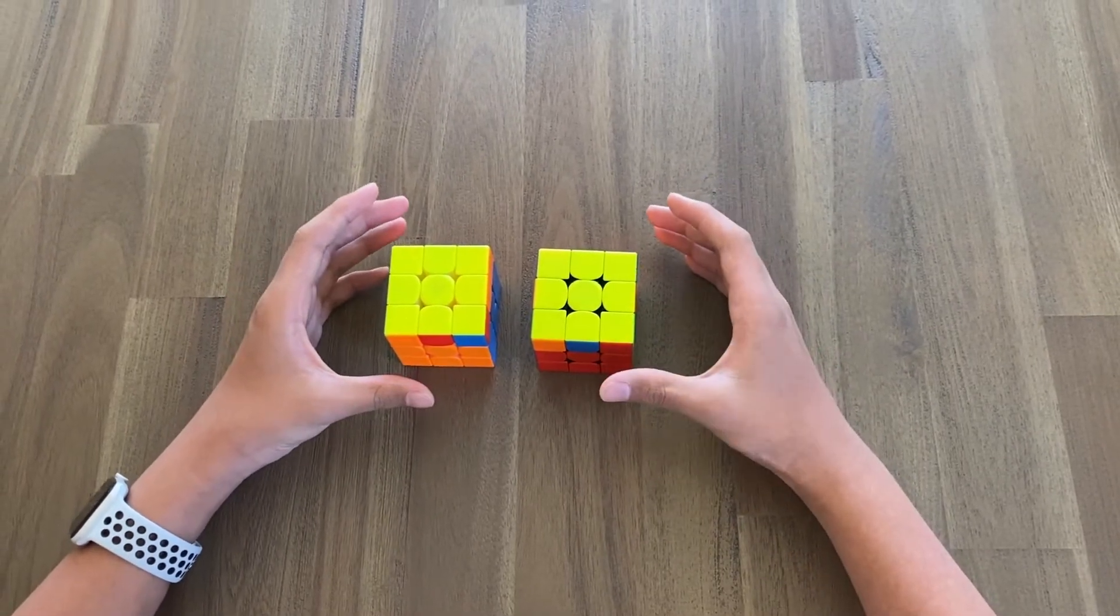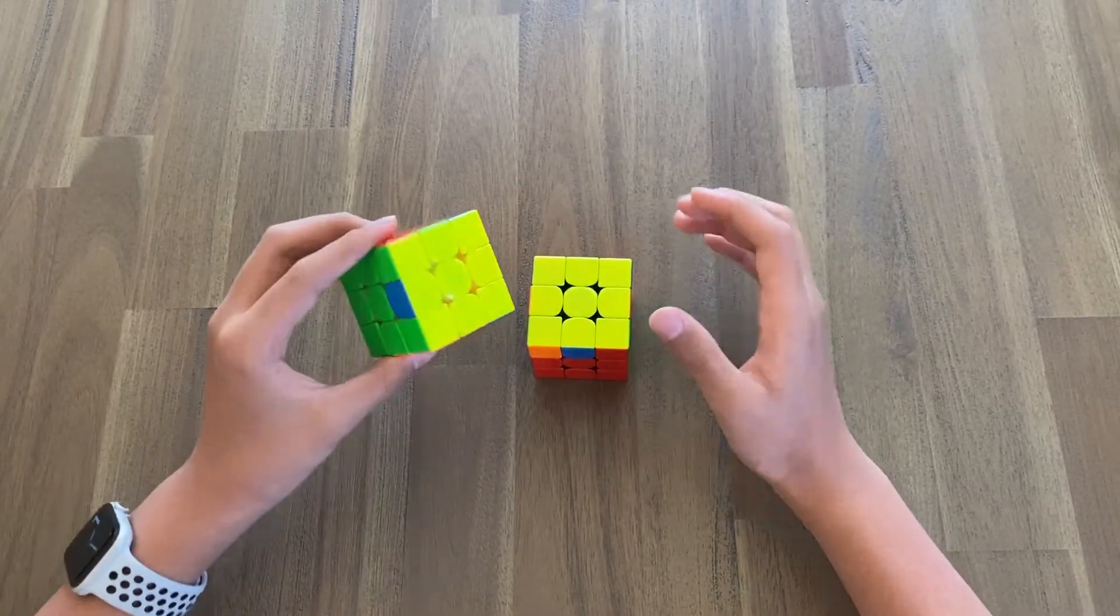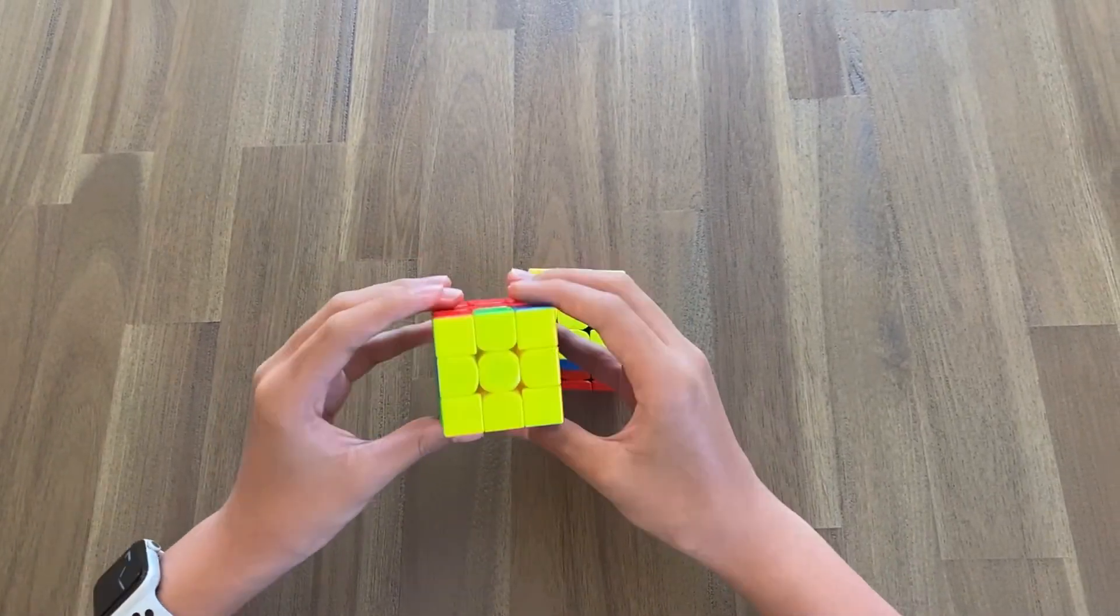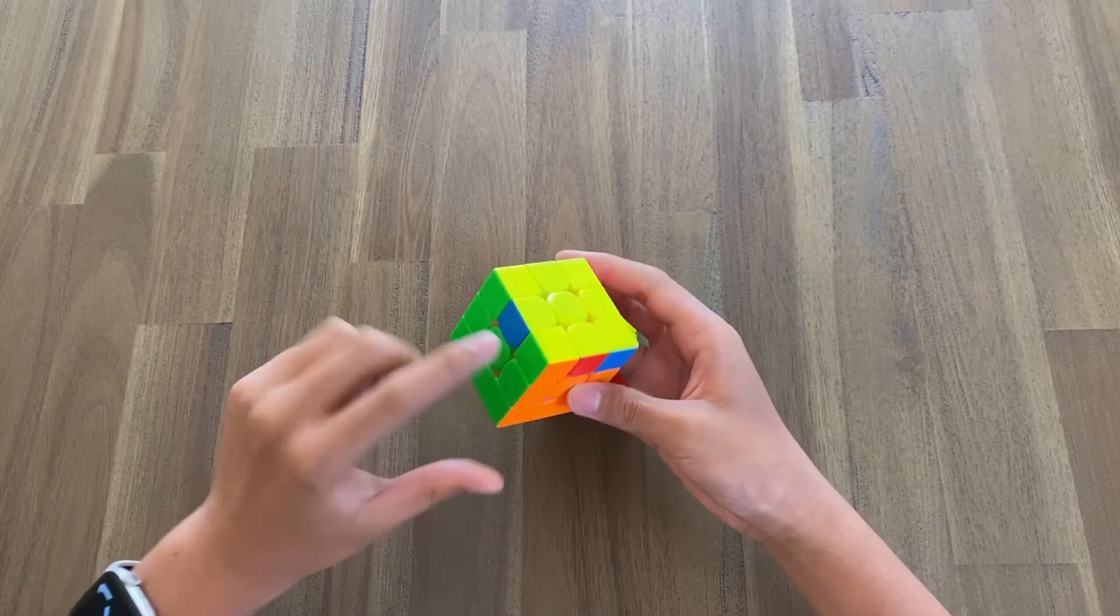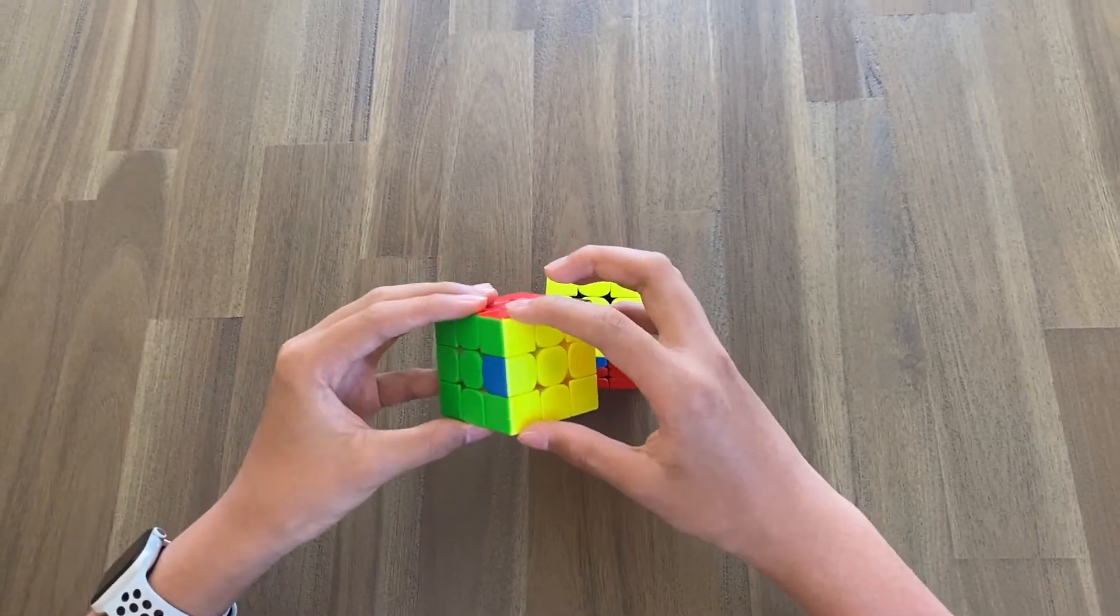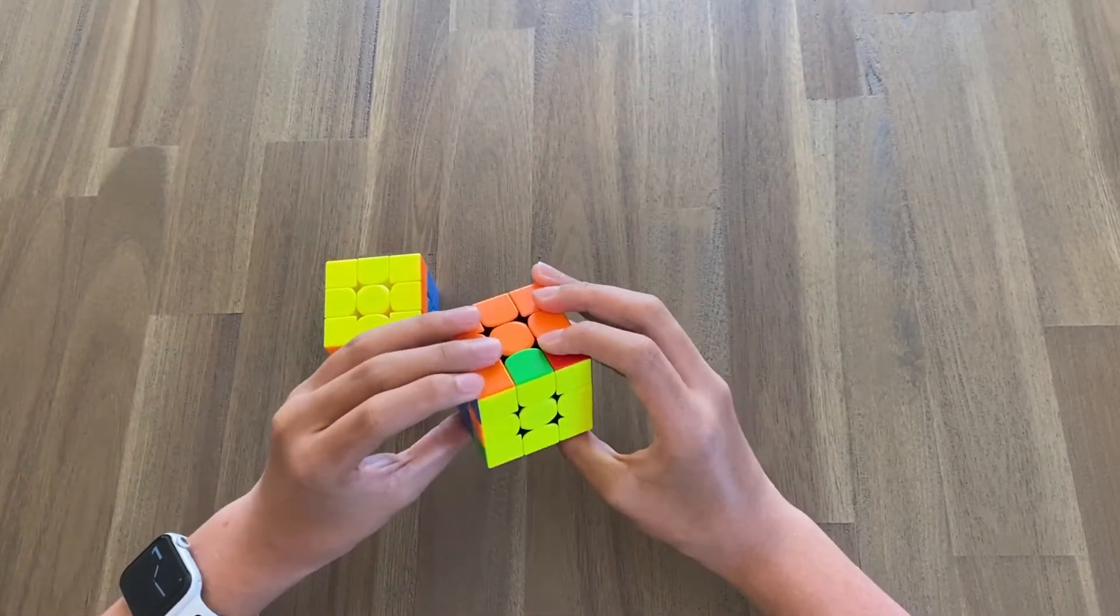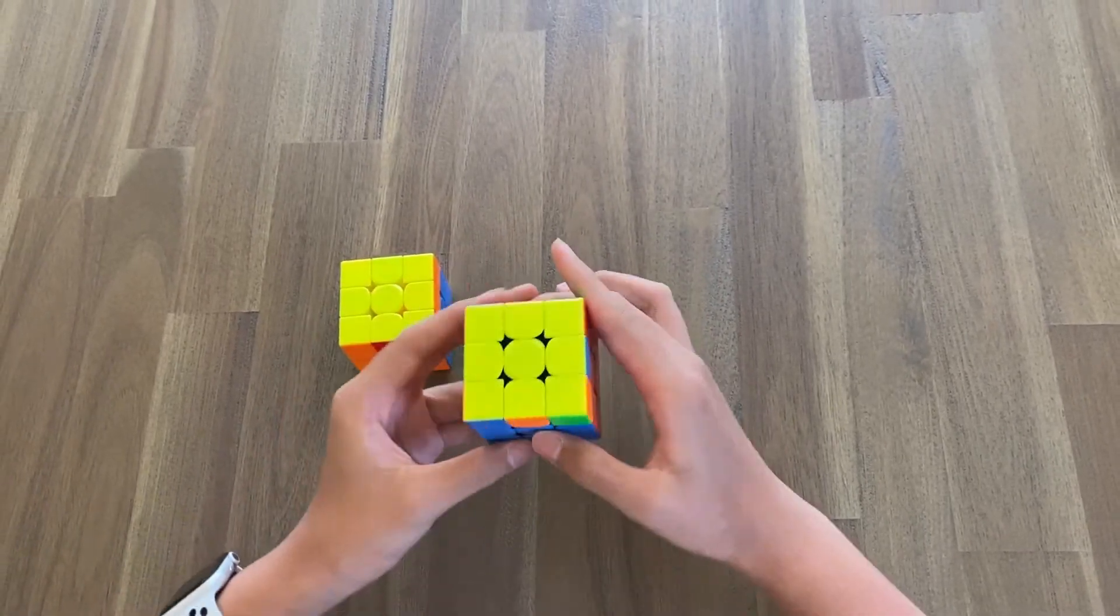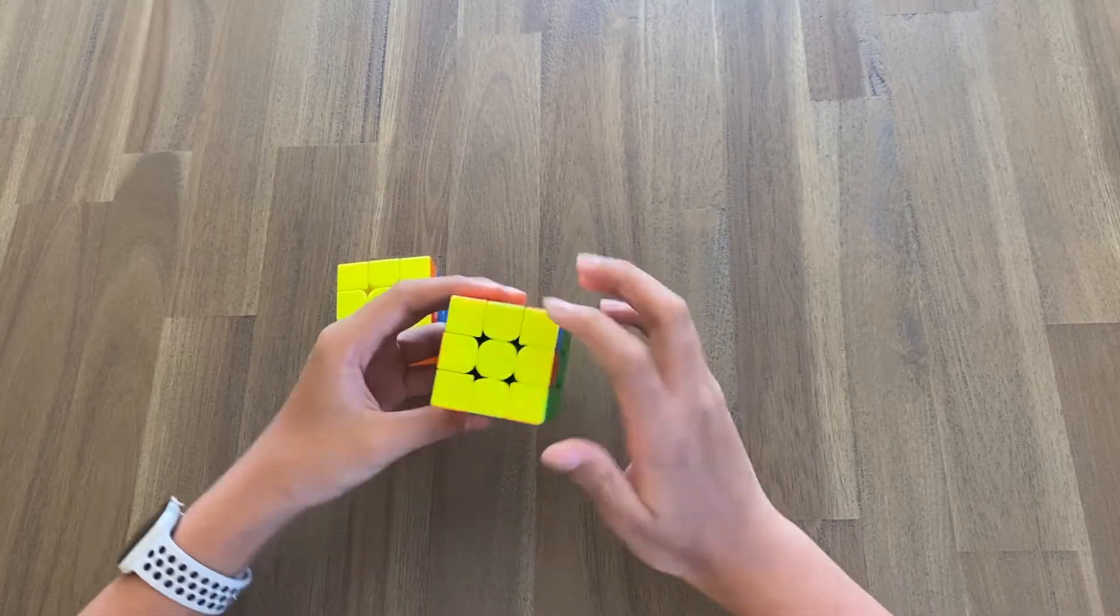When you're doing the corners, there are two cases you can run into. The first one is where the two solved corners are right next to each other. The other case is one corner is here and the other corner is further across, so it's kind of diagonal.